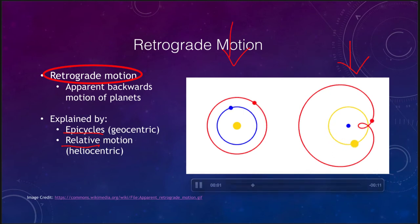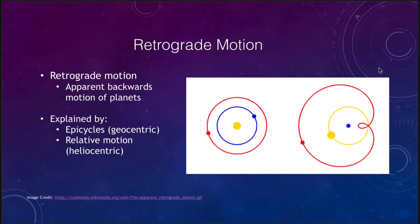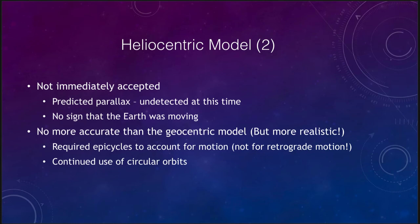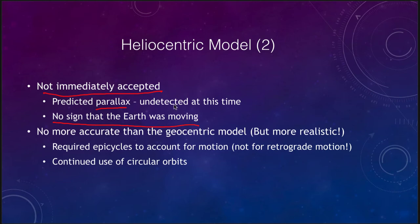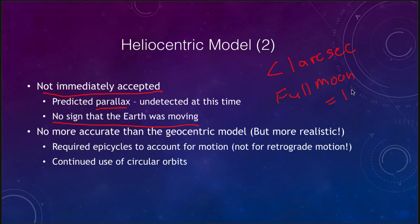Was the heliocentric model immediately accepted? No, it was not immediately accepted as the model of the universe. One big reason is because parallax was not detected and there was no sign that the Earth had to be moving. Parallax was a prediction it made but was still undetectable at this time — the values were just too small. In fact, the first parallax to be measured was less than one arc second, and the full moon has a diameter of 1800 arc seconds. So we were trying to measure less than one two-thousandth the diameter of the full moon — well beyond the technology of the time.